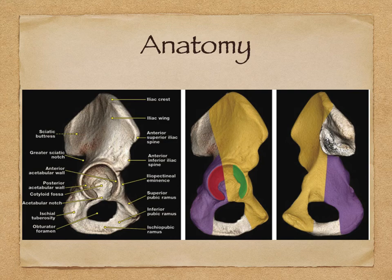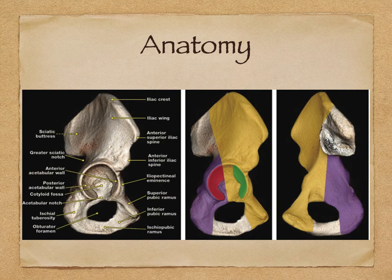Before we start, it is important to understand the anatomy. The whole acetabulum and pelvis is divided into two halves - the anterior half shown in gold and the posterior half shown in violet. The area not covered on the top is the sciatic notch. At the top is the iliac crest, then the iliac wing. You should be able to identify the anterior superior iliac spine, anterior inferior iliac spine, iliopectineal eminence, superior pubic ramus, inferior pubic ramus, ischiopubic ramus, obturator foramen, ischial tuberosity, acetabular notch, cotyloid fossa, posterior and anterior acetabular walls, and the greater sciatic notch.